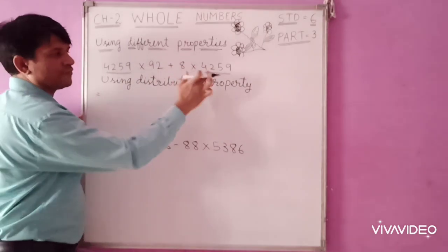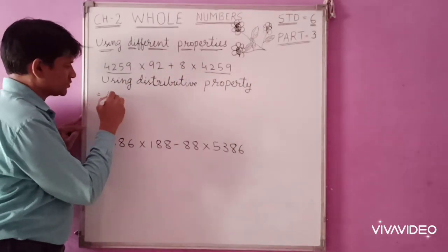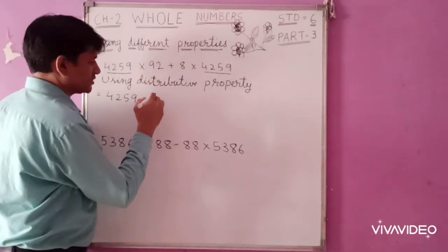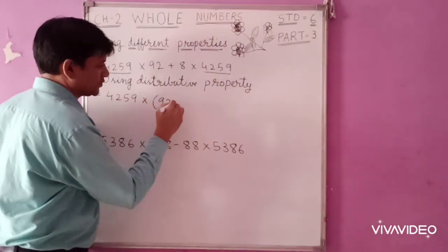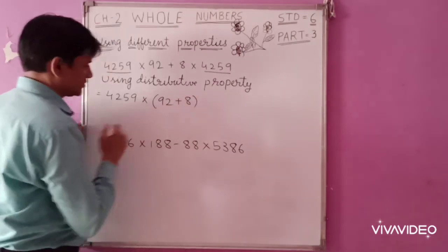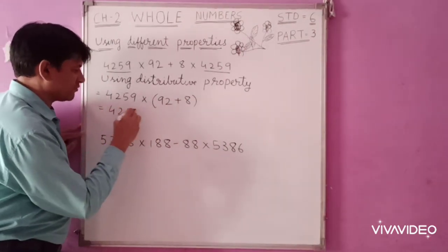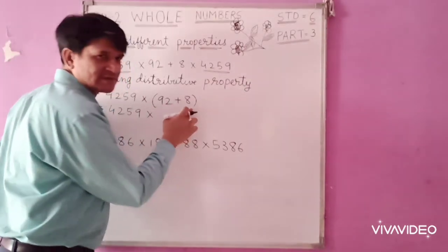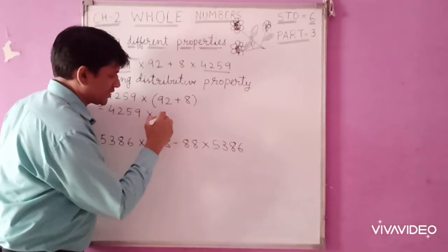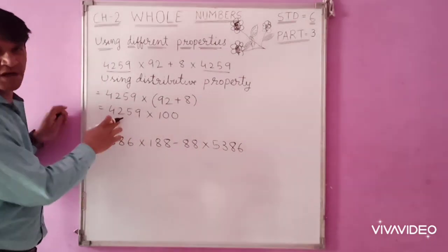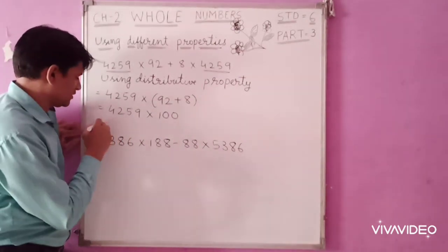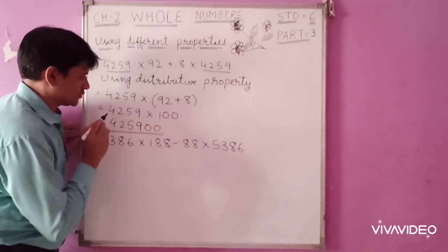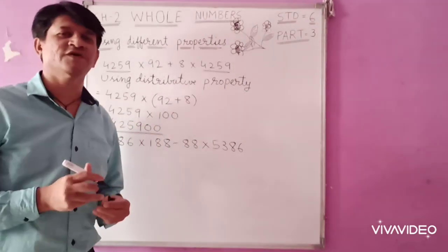We write 4259 common, and the remaining numbers in the bracket are 92 plus 8. So: 4259 multiplied by (92 plus 8) equals 4259 multiplied by 100. Now 100 multiplied by 4259 equals 425,900. So this is the answer for the first problem.